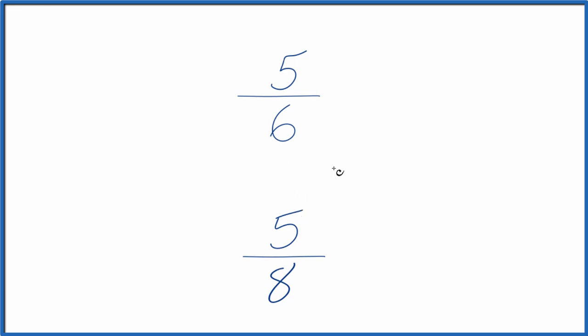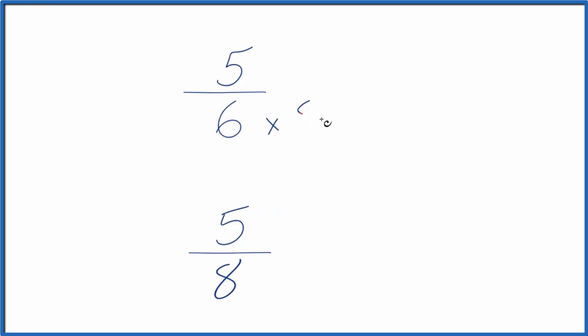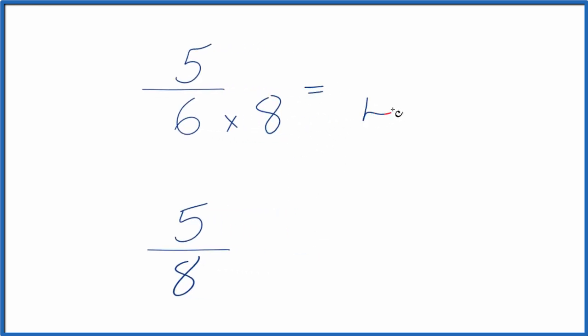There's a few ways to do it. Probably the easiest is just to take 6 times 8, because 6 times 8 equals 48. That's our denominator here. And down here, 8 times 6 equals 48 as well. Now we have the same denominator.